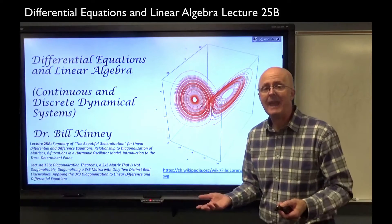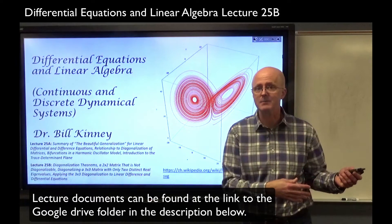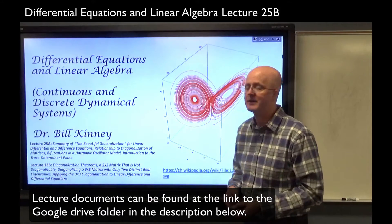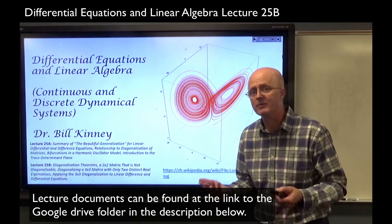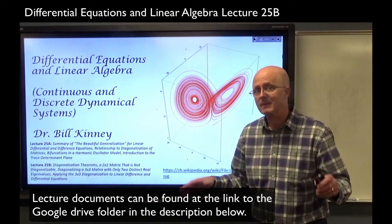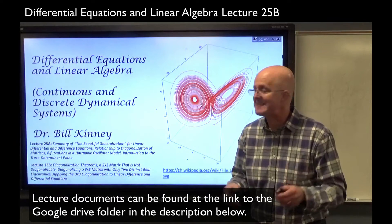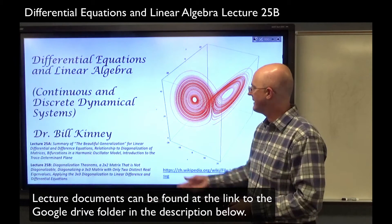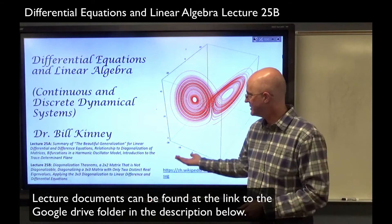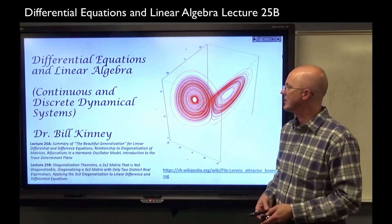We can certainly do that in the case where we have three distinct real eigenvalues — then we would know it would be diagonalizable. But in this case, it's only going to have two distinct real eigenvalues. One of them is going to be repeated with multiplicity 2. You're not guaranteed diagonalizability in that case, but in this case it is diagonalizable. And then we'll apply that diagonalization via what I call the beautiful generalizations in 25a to linear difference and differential equations.